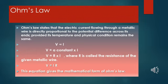It is stated as: Electric current flowing through a metallic wire is directly proportional to the potential difference across its ends, provided its temperature and physical conditions remain the same. V proportional to I, i.e., voltage proportional to current or current proportional to voltage.